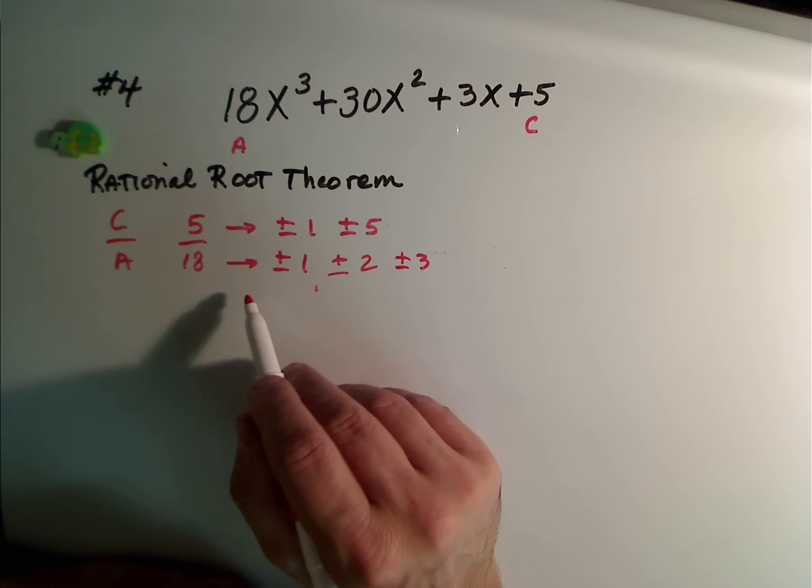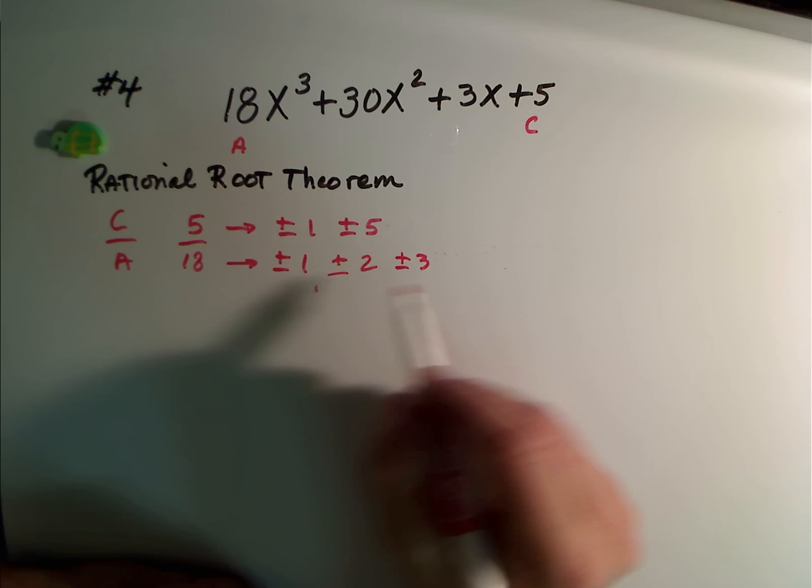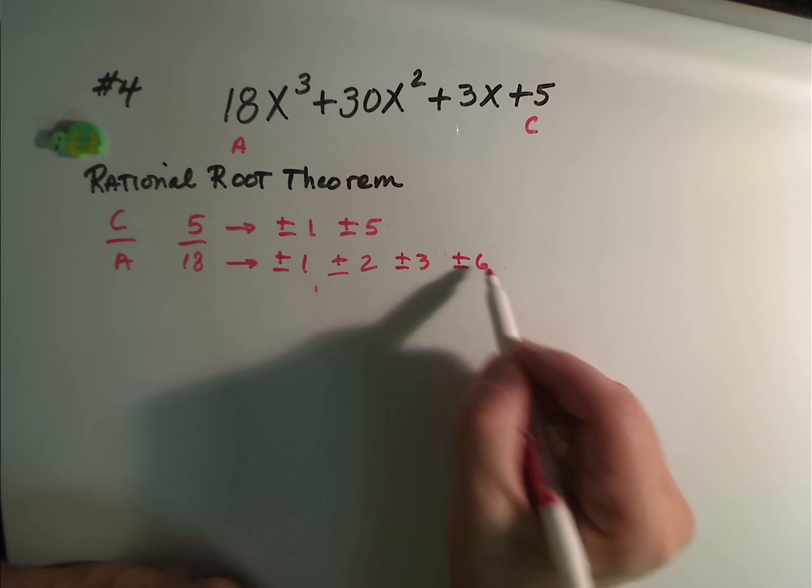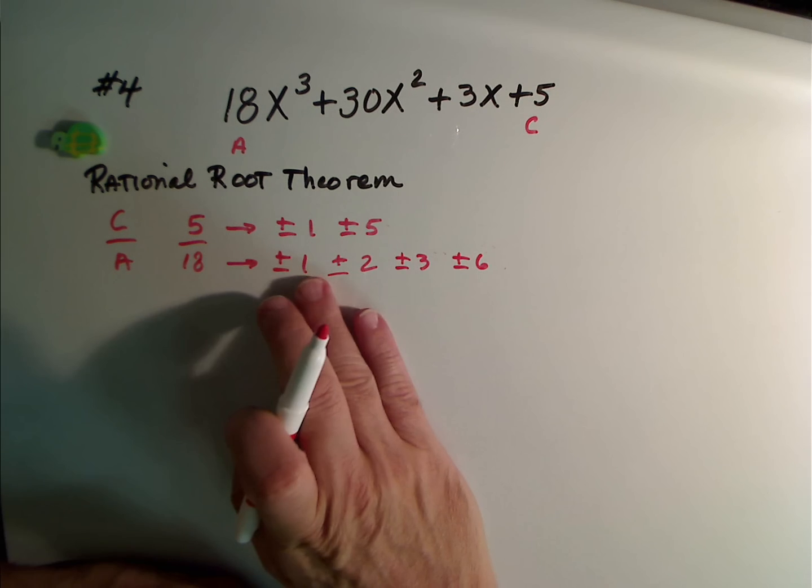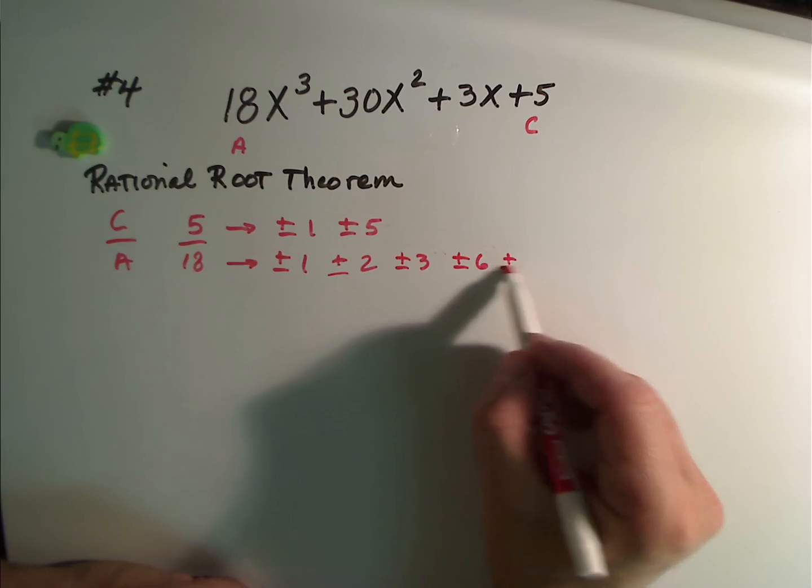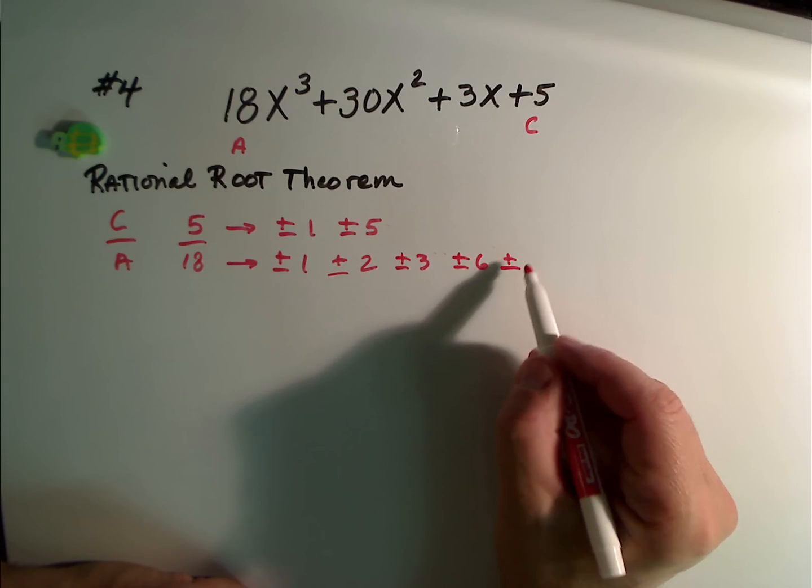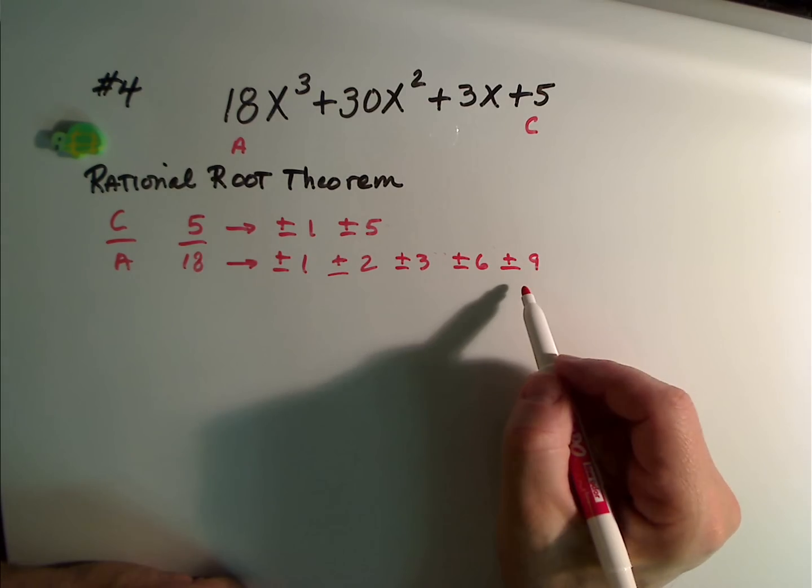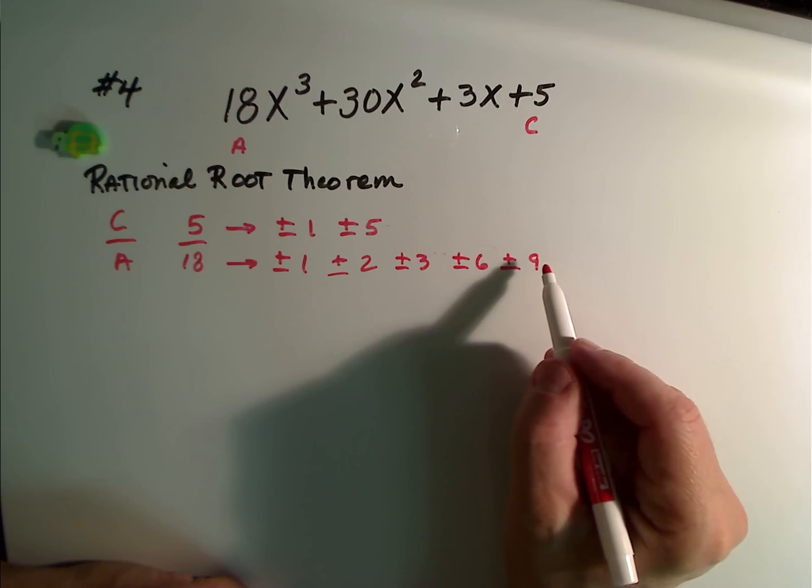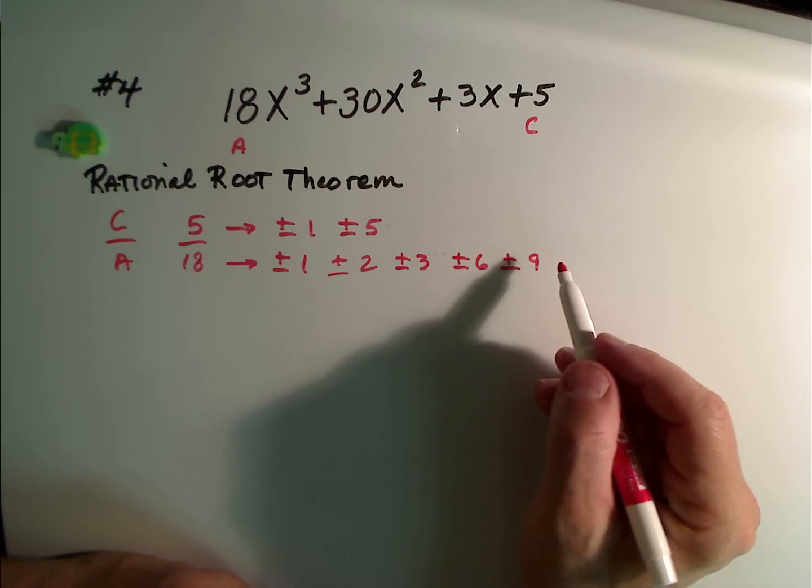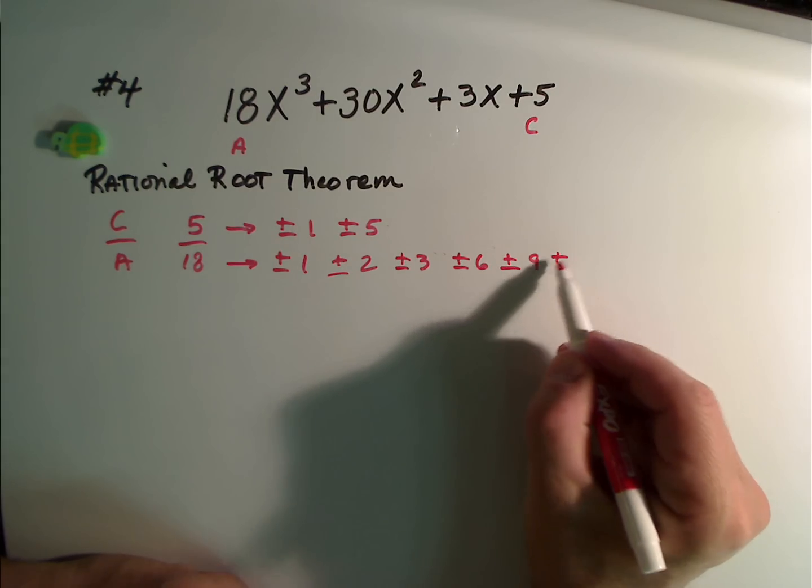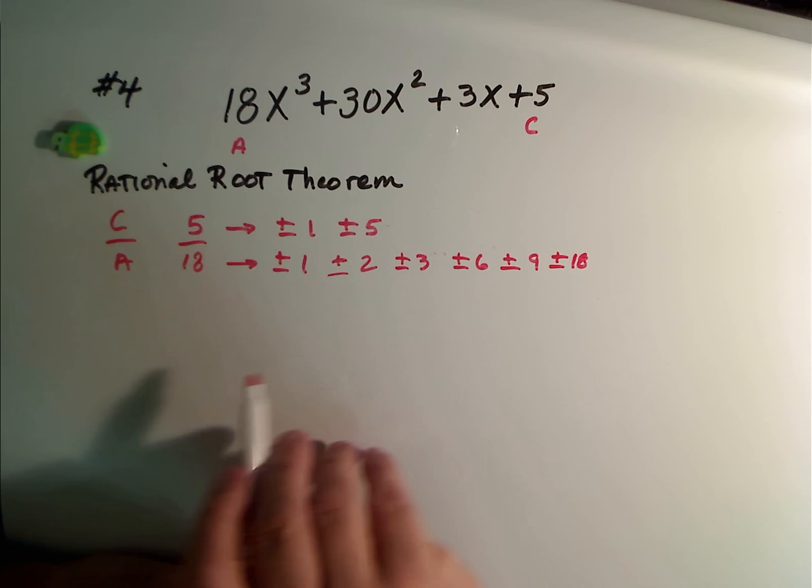4 doesn't go into 18. 5 does not go in. 6, so yeah, plus or minus 6 because 3 times 6. Not 7, not 8, but yes with the 9. And then not 10, not 11, not 12. Well, we're already past halfway point. So we're looking at plus or minus 18.